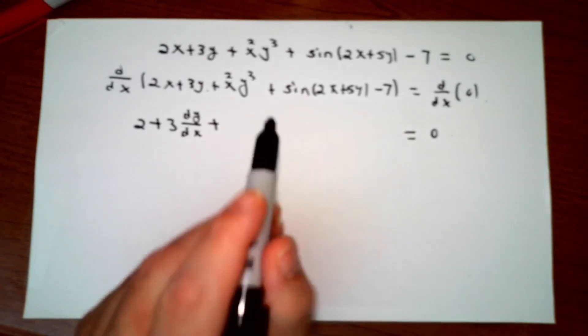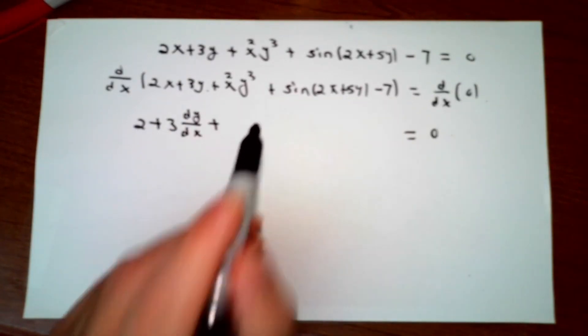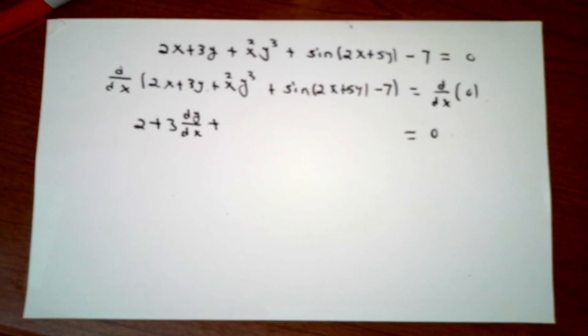In the next term, I have x squared times y cubed, which is not so good. This is a product, so I'll have to use the product rule. The derivative of x squared isn't going to cause me any difficulty, but because I'm thinking of y as being locally a function of x, to do the derivative of y cubed, I'm going to have to do the chain rule on it.